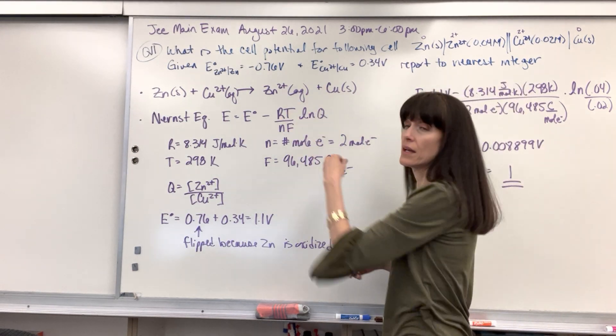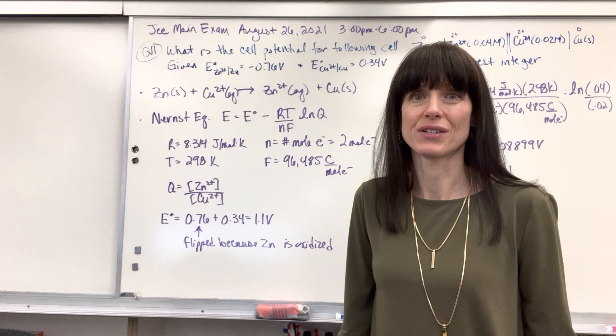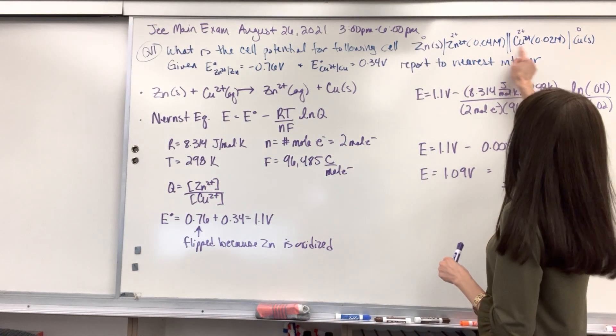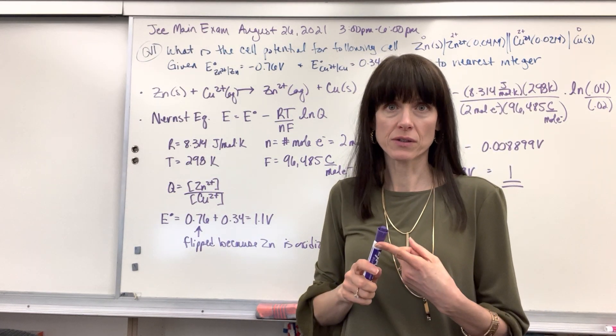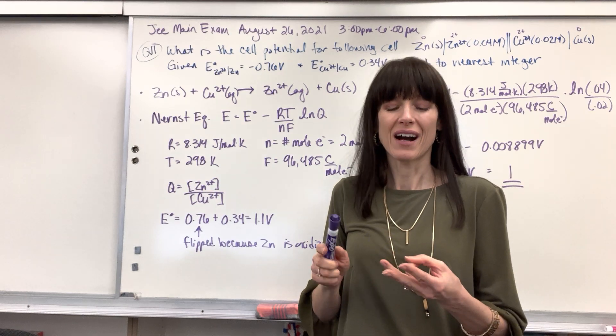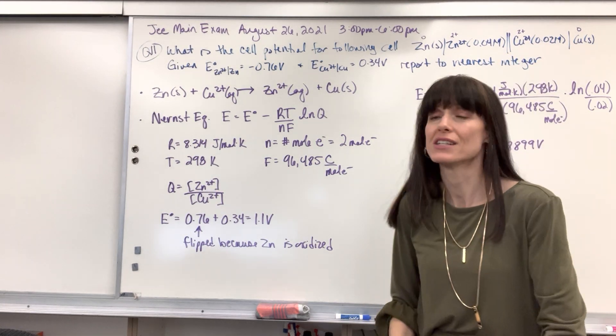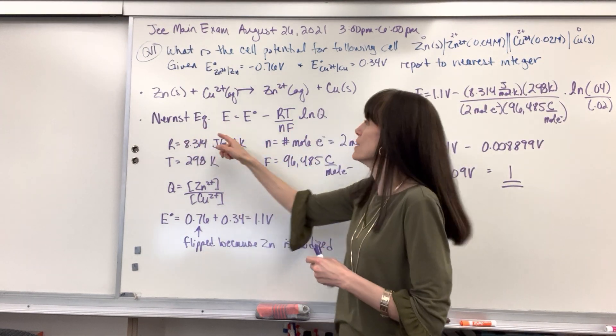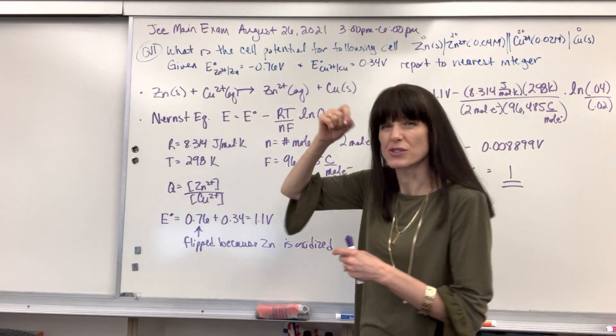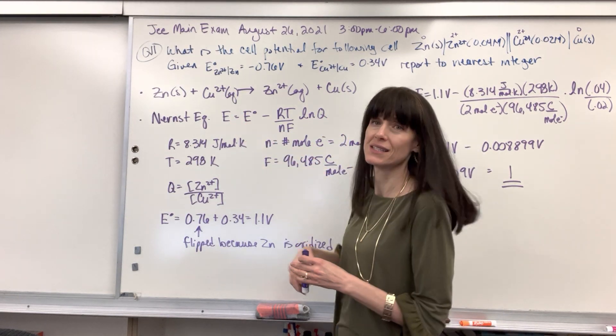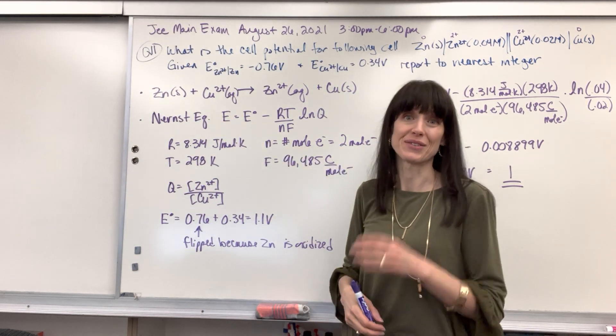Now with that in mind, we can now go to the Nernst equation. We are at non-standard conditions, and there's one way I know this. It's because of these concentrations. Remember, standard conditions are going to be one molar. It's when we're at 25 degrees C, one ATM or one bar and at one molar. We're not at one molar, which means we're at non-standard conditions. So we have to use the Nernst equation to find the cell potential at non-standard conditions. Notice we don't have that little circle, it's called not. That not indicates standard conditions. We're at non-standard conditions.